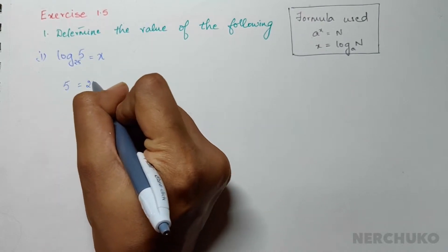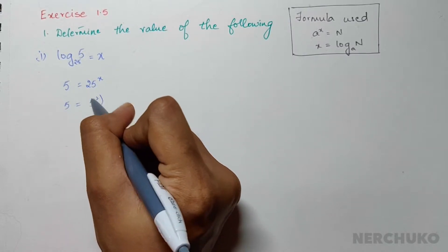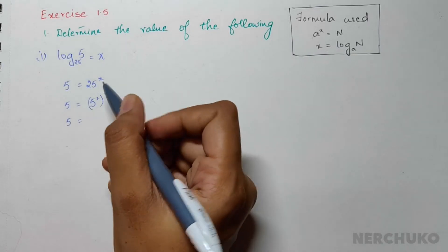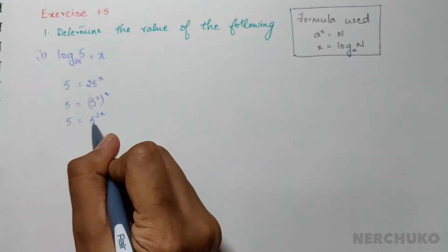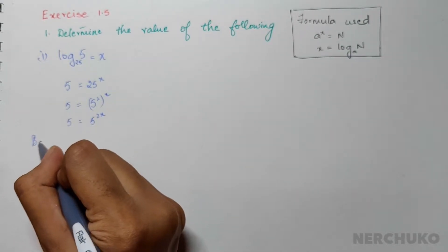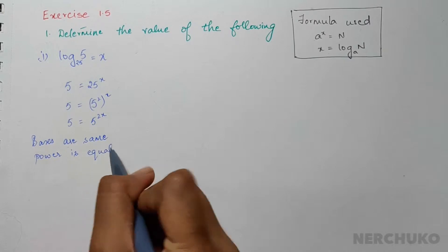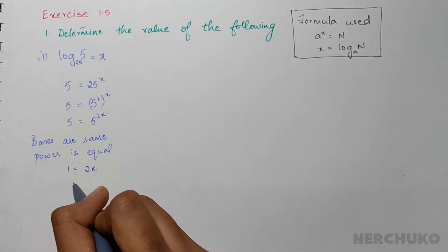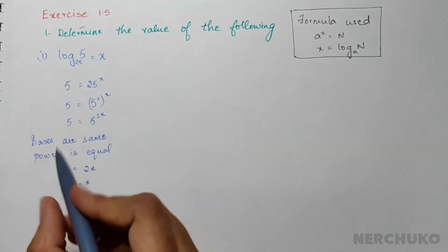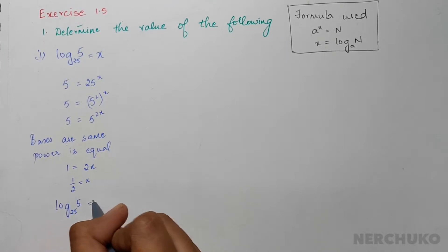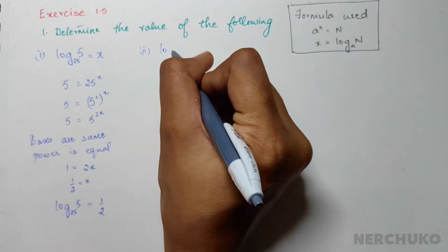Applying this conversion, I would have 5 equal to 25 to the power x. 25 can be written as 5 squared, so that gives me 5 squared whole to the power of x, meaning 5 equals 5 to the power 2x. Since the bases are the same, we equate the powers, giving 1 equals 2x, so x equals 1 by 2. Therefore log 5 to base 25 equals 1 by 2. For the second bit we have log 3 to base 81.